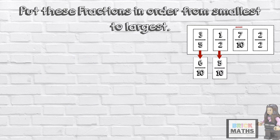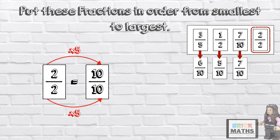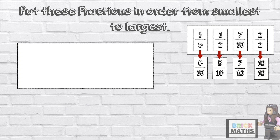The next fraction is 7 tenths, and it already has 10 as its denominator. The next fraction is 2 halves. So 2 times 5 equals 10, and 2 times 5 equals 10, so 2 halves is equivalent to 10 tenths.